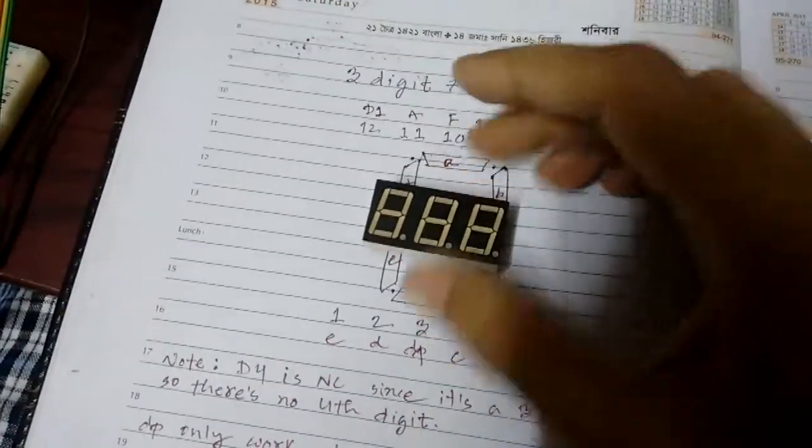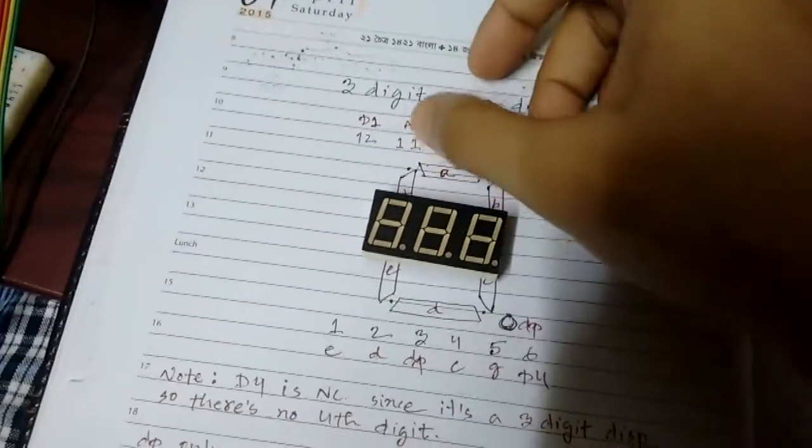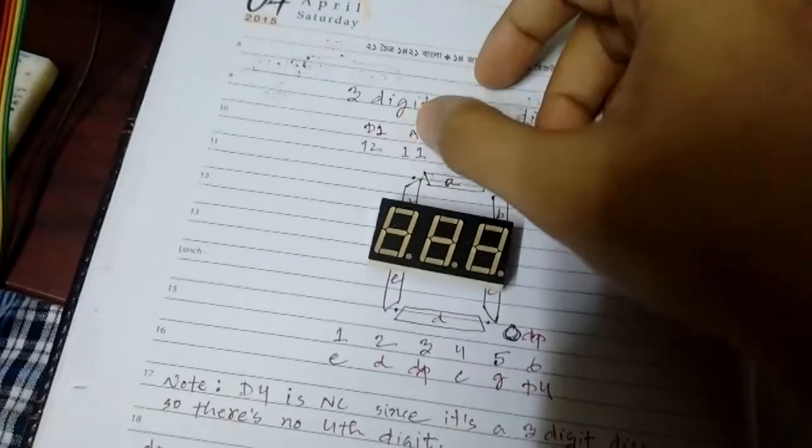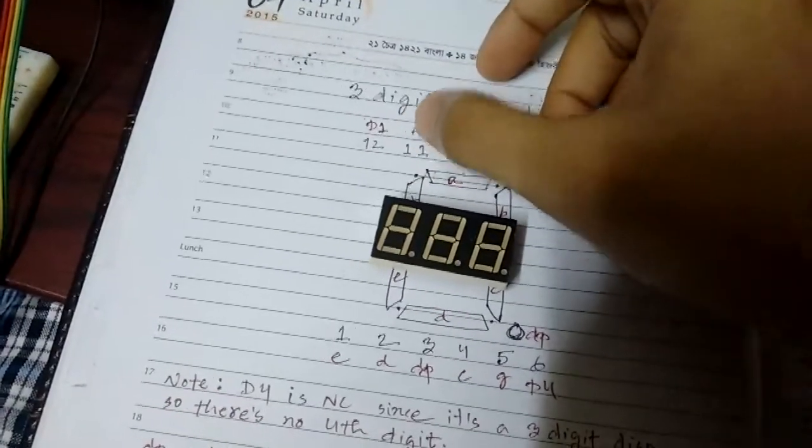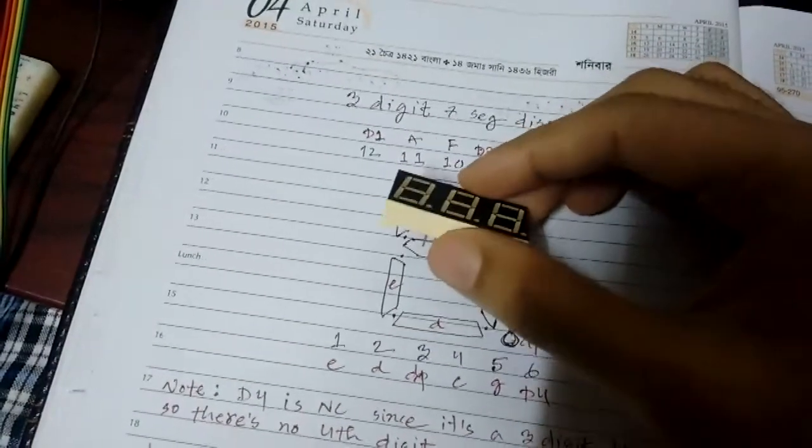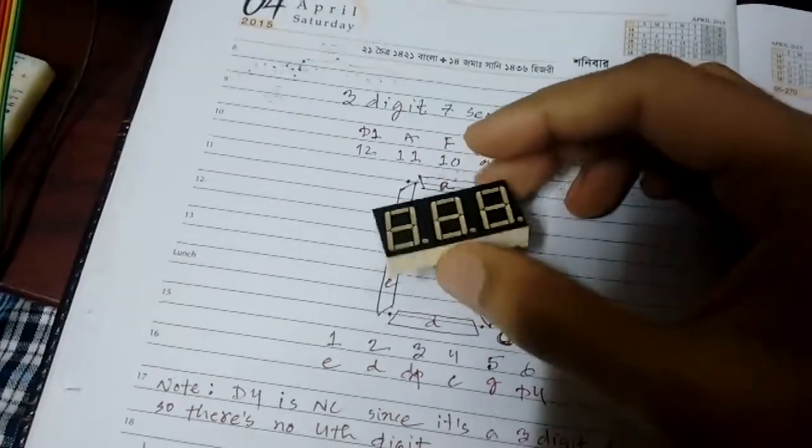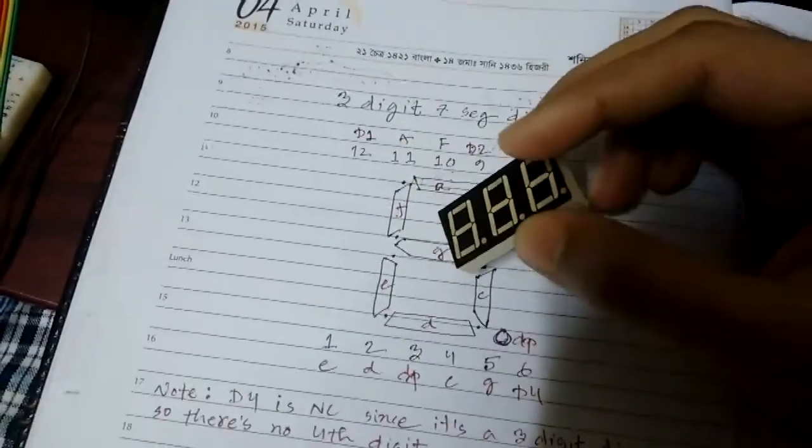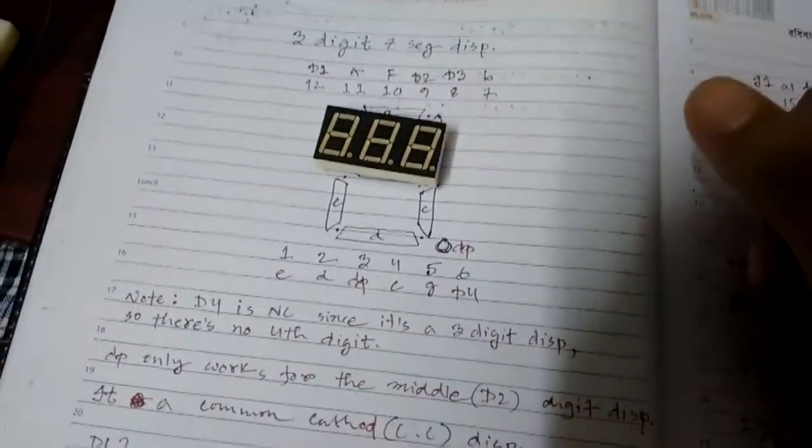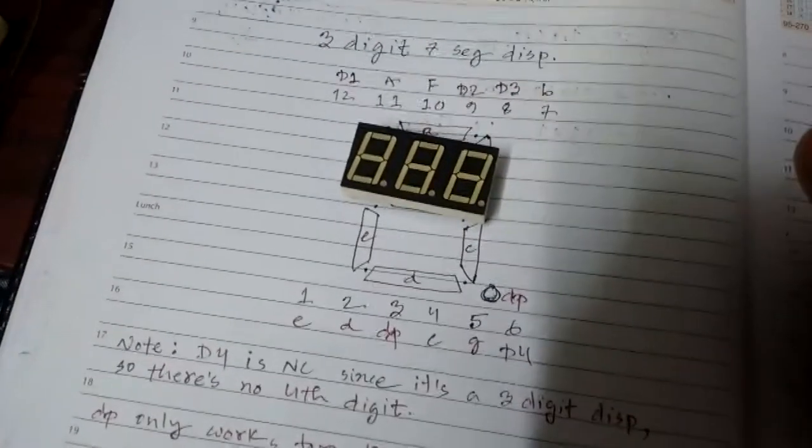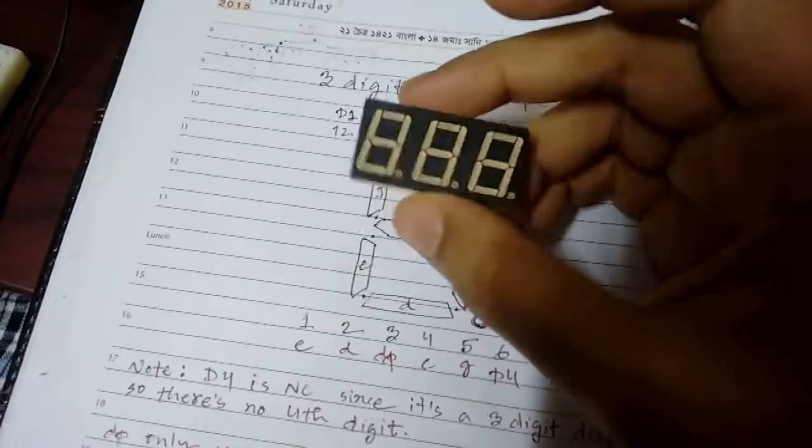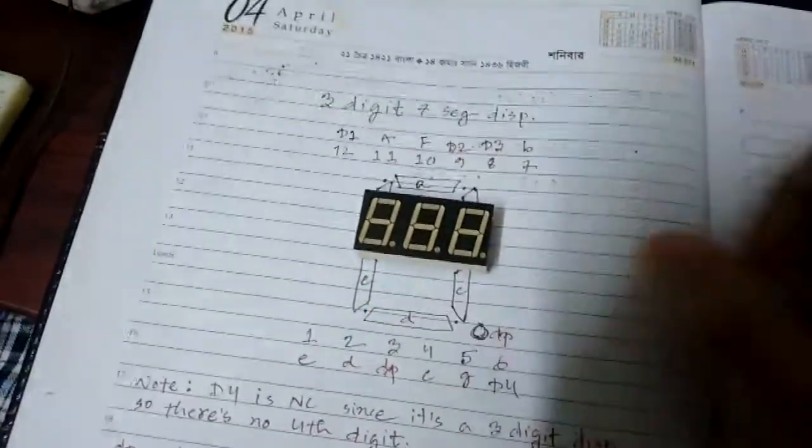The problem is the 8089 S50 can only sink current. So as you can see, in order to light up segment A, I have to provide positive voltage on the display, but I can't do that with my 8089 S52 because it only can sink current.